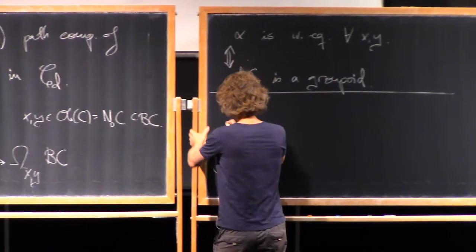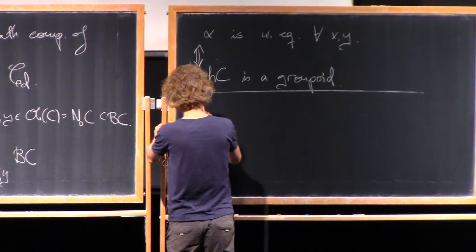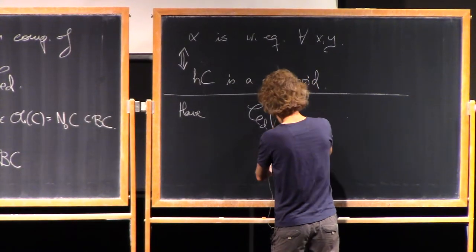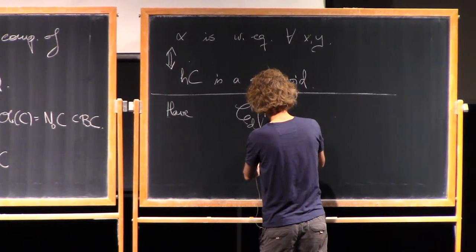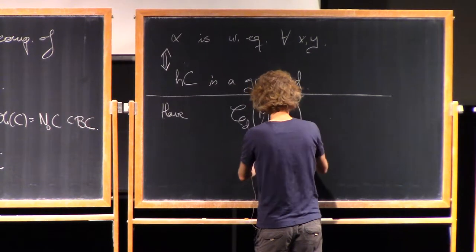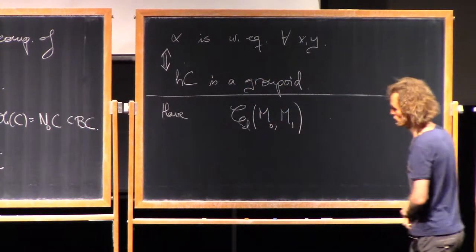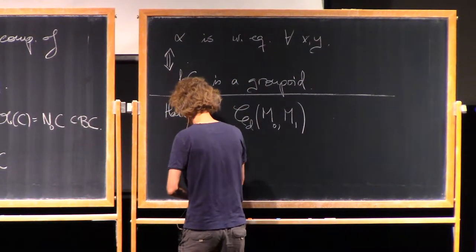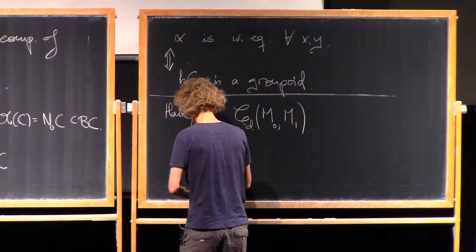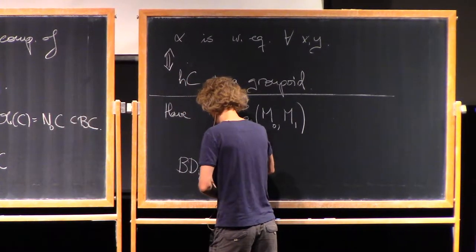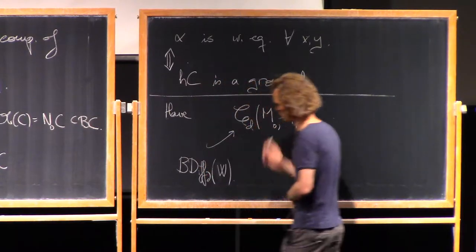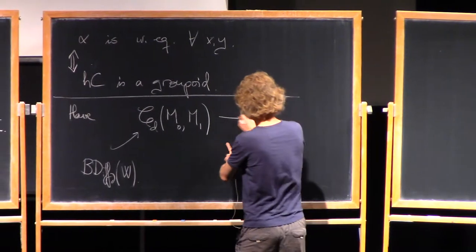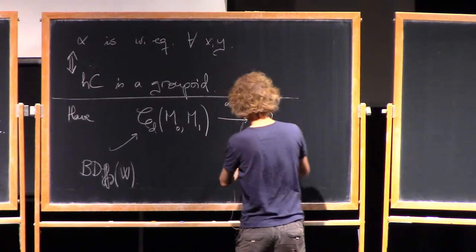Nevertheless, we still have the map. So for the cobordism category, d-dimensional cobordism category, if I pick two closed d-1 manifolds, inside this hom space I have a component that has the homotopy type of, I mean, classifying space. This is for smooth bundles. And I have this map, an instance of this alpha.